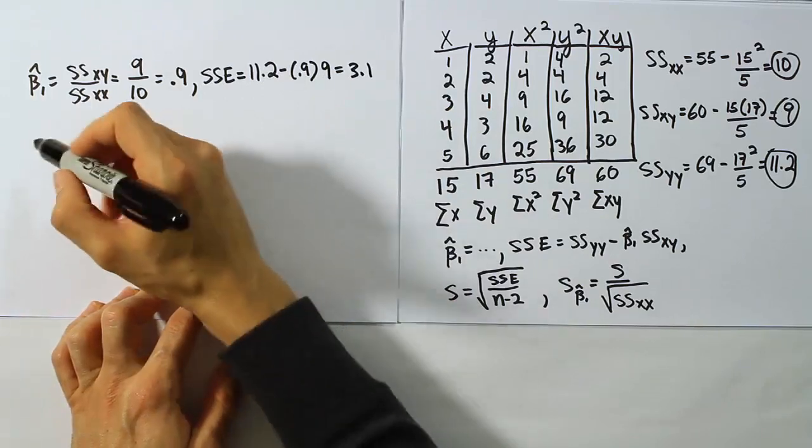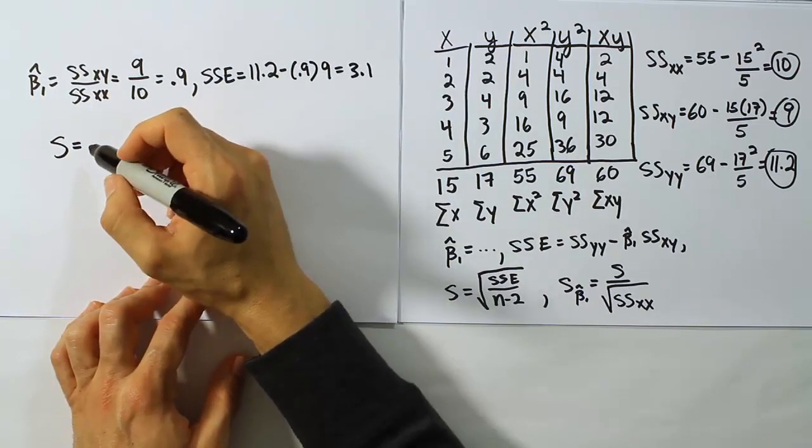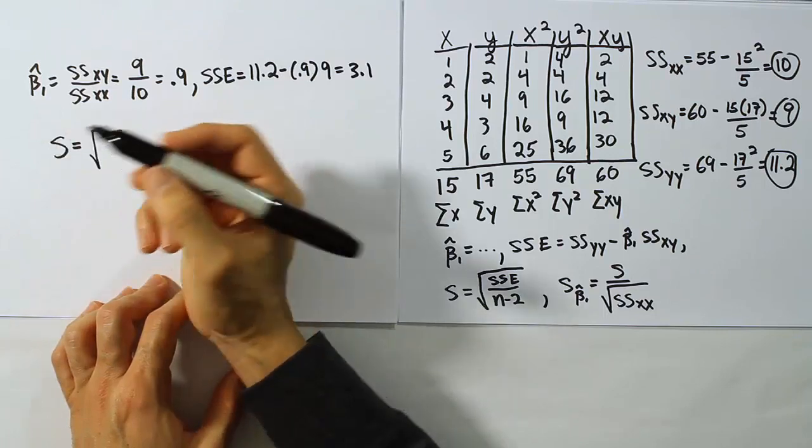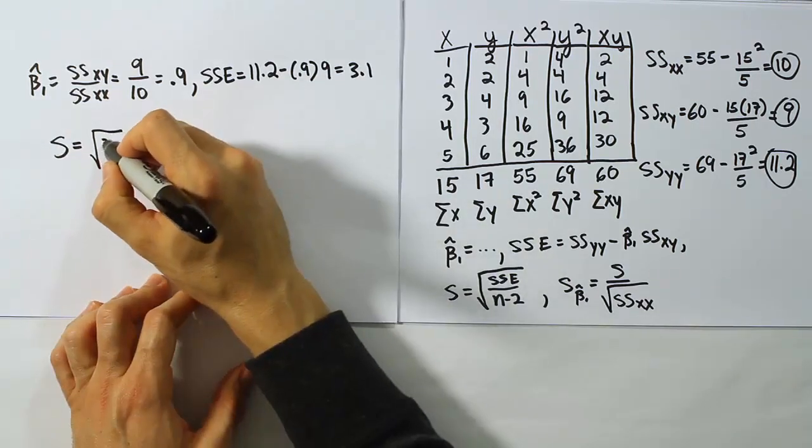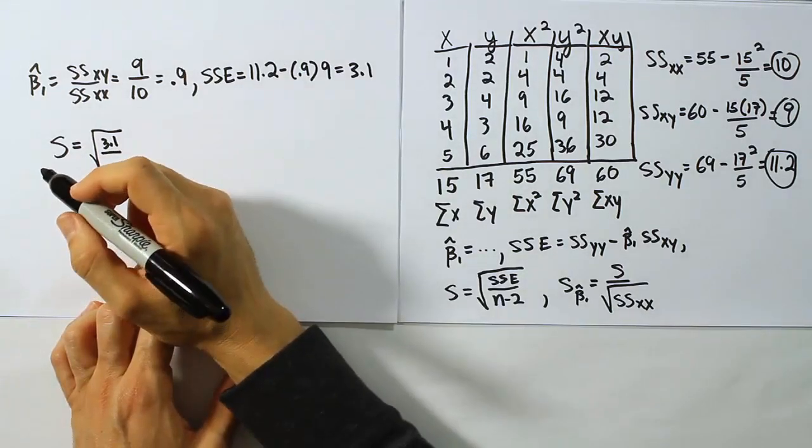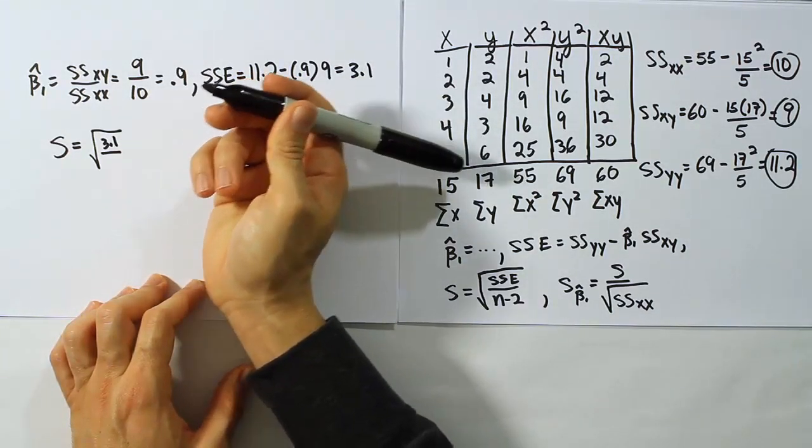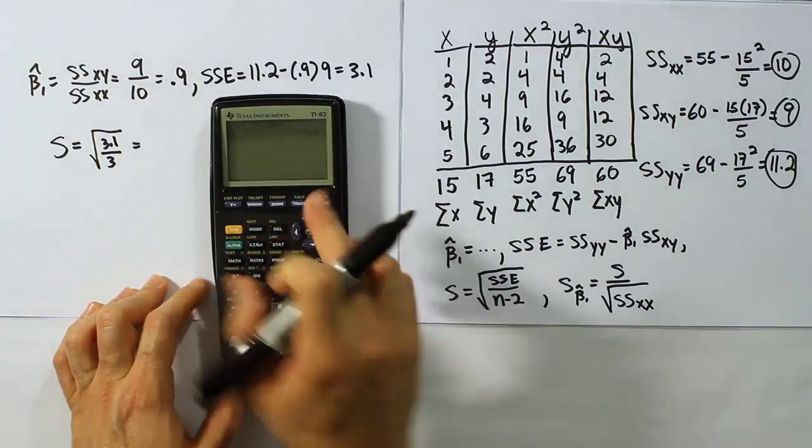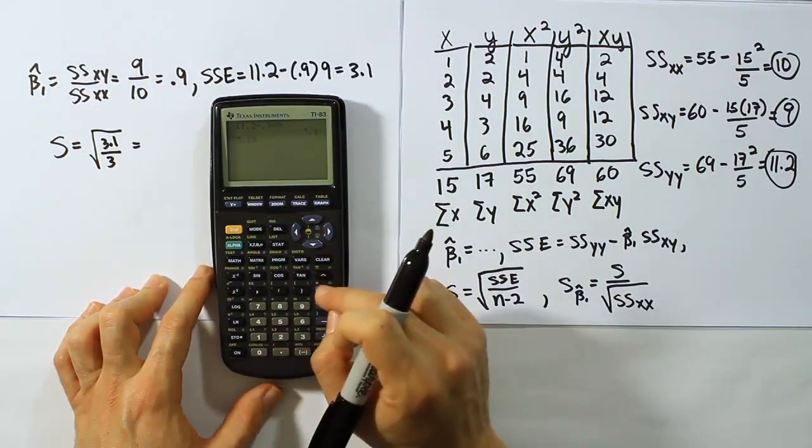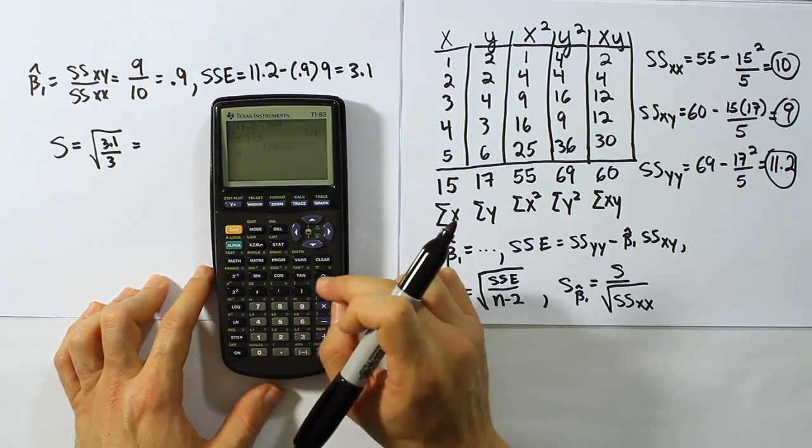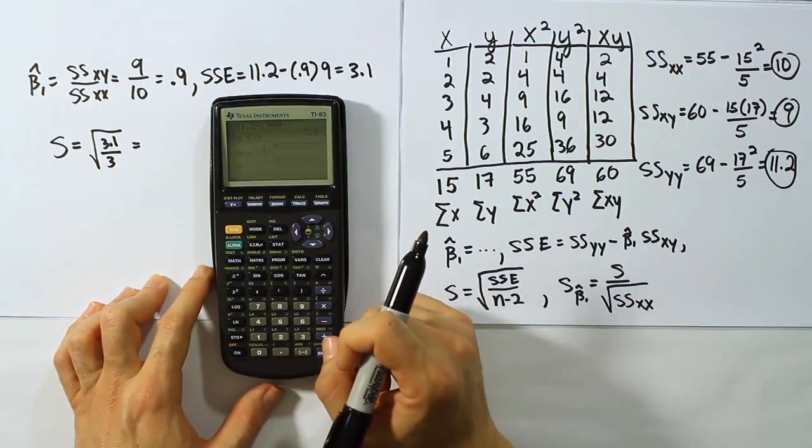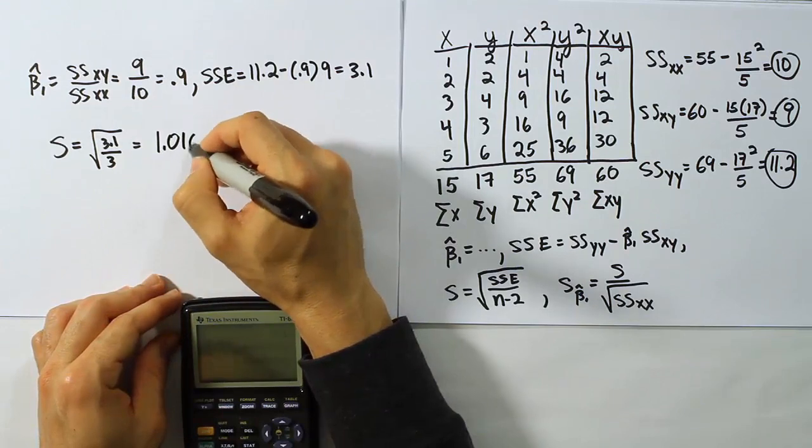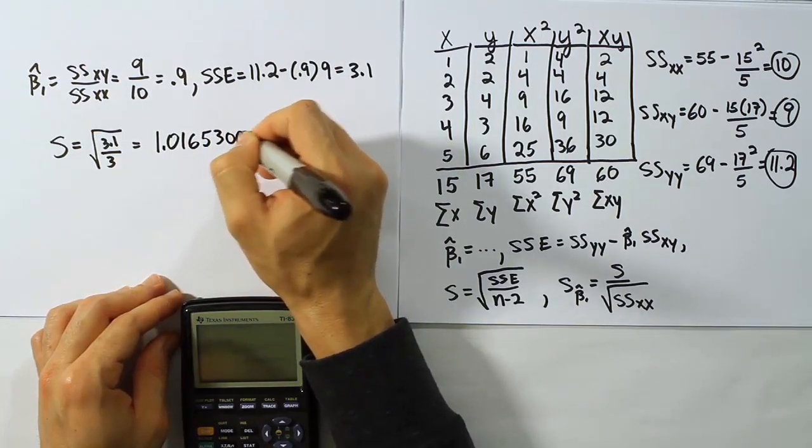So SSE is to be used in our next calculation, which is the calculation to get s, the estimator for the standard deviation of the error term. So, that's going to be our SSE value, which is 3.1 divided by n minus 2. Now, we only had 5 unique pairs of data points to start with, so we take away 2 and we end up with 3 as our n minus 2 value. Let's do that now as well. So, we'll have 3.1 divided by 3. And then, we're going to raise that to the half power, which is the same as taking the square root. And we get 1.016530045.